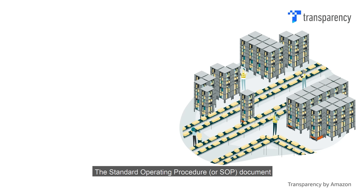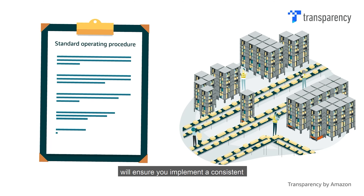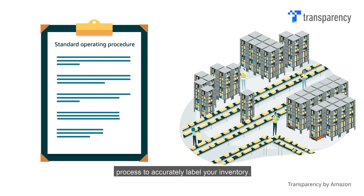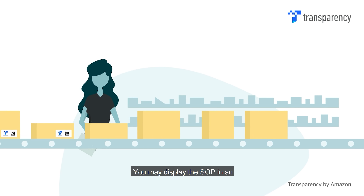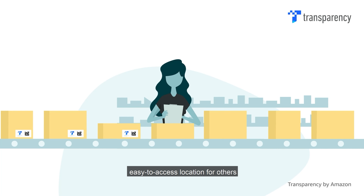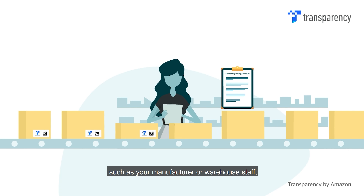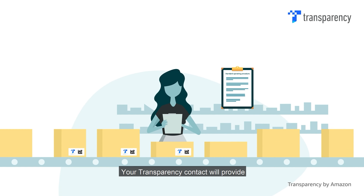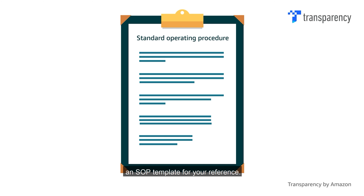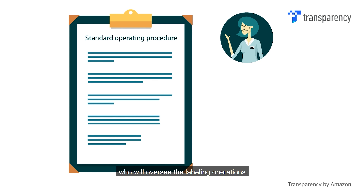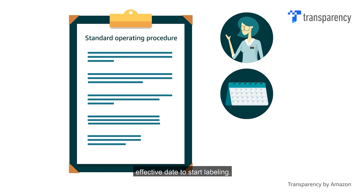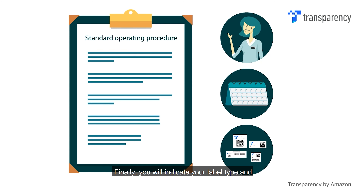The Standard Operating Procedure, or SOP, document will ensure you implement a consistent process to accurately label your inventory. You will complete and submit an SOP to your Transparency contact. You may display the SOP in an easy-to-access location for others, such as your manufacturer or warehouse staff, to use as a guide when labelling. Your Transparency contact will provide an SOP template for your reference. When drafting the SOP, you will define responsibilities by specifying who will oversee the labelling operations, define an estimated effective date to start labelling, and indicate your label type.